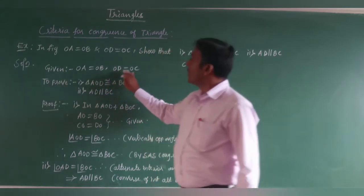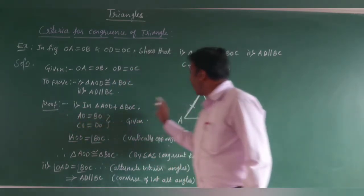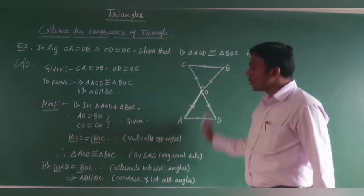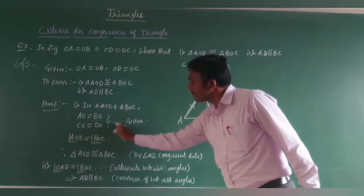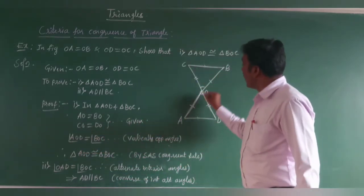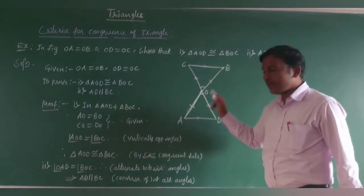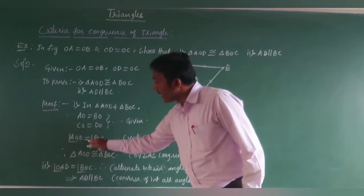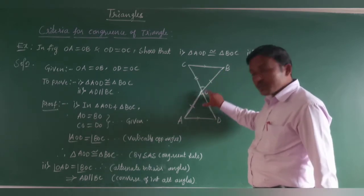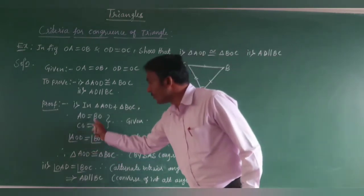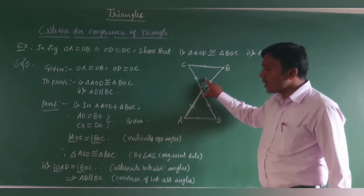It is given that OA = OB and OD = OC. In triangles AOD and BOC: AO = BO and CO = DO (given). Angle AOD = angle BOC because these two are vertically opposite angles. So two sides and one included angle of one triangle are equal to two sides and one included angle of the other triangle. Therefore, triangle AOD is congruent to triangle BOC by the SAS congruence rule.